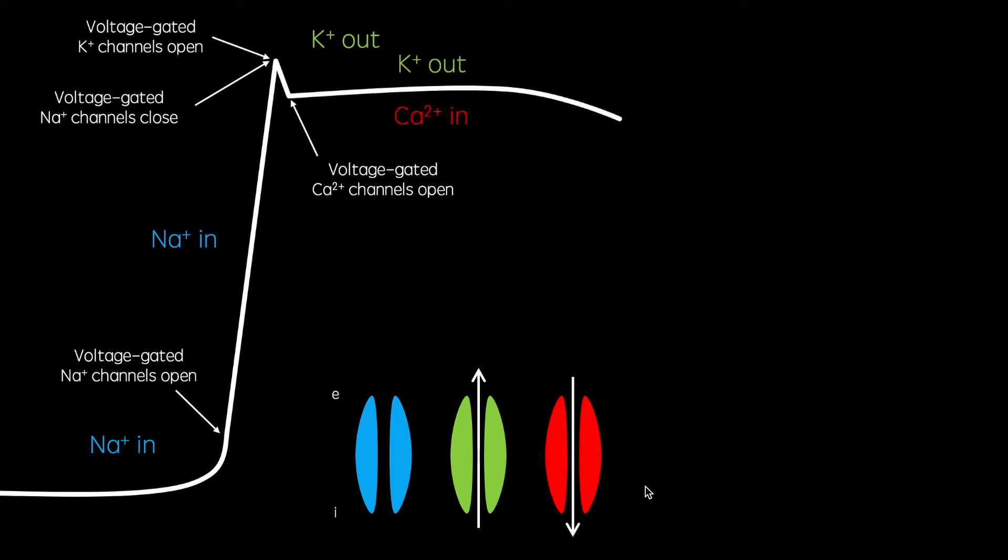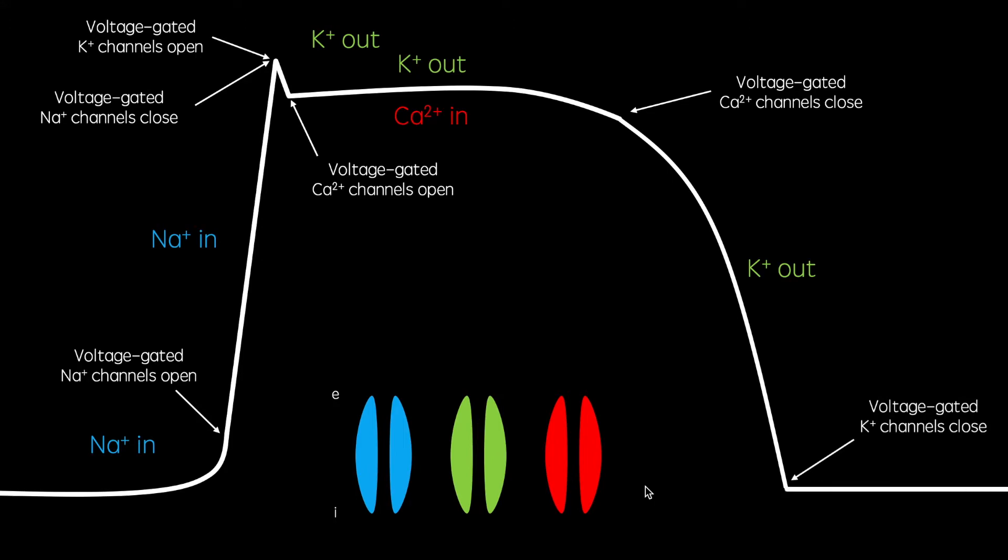As calcium influx and potassium efflux are occurring simultaneously, the membrane potential plateaus. However, the calcium channels quickly close and the potassium channels remain open, facilitating membrane repolarization. When the original membrane potential of minus 90 millivolts is reached, potassium channels close and the cycle is repeated.